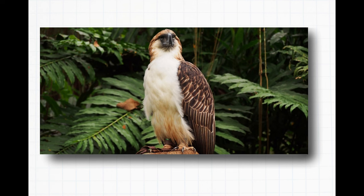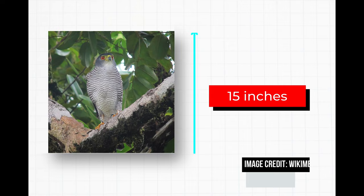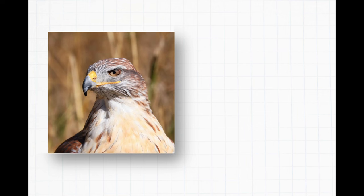For instance, the tiny hawks of Central and South America weigh only around 2.5 to 4.4 ounces and measure a mere 15 inches long at their smallest. Compare this to the largest hawk species, the ferruginous hawk. Females can grow up to 27 inches long and weigh nearly 4 pounds.